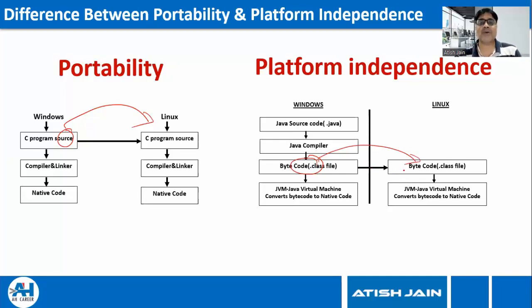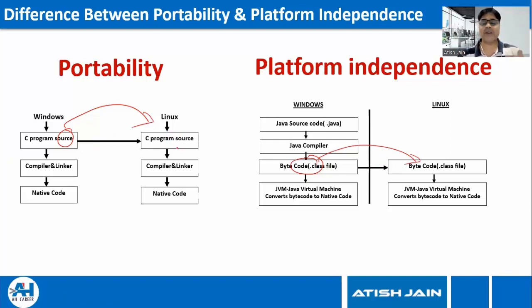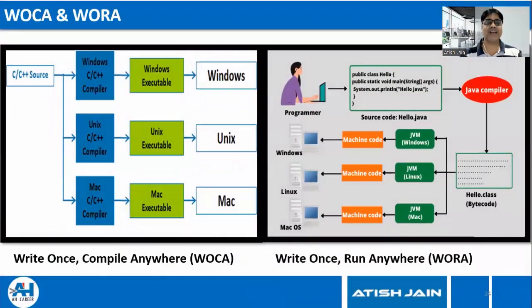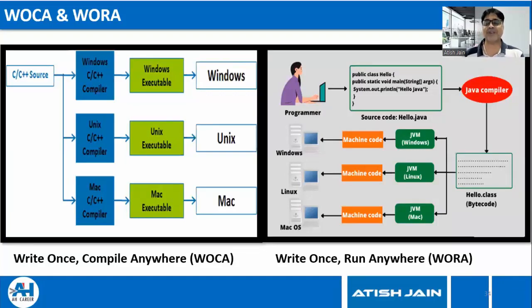Platform-independent code can be executed directly on another platform. In portability, only the source code is moved and you must recompile it for the target operating system. The slogan for C and C++ is 'write once, compile anywhere,' but the slogan for Java is 'write once, run anywhere.' That concludes the introduction to Java programming language.